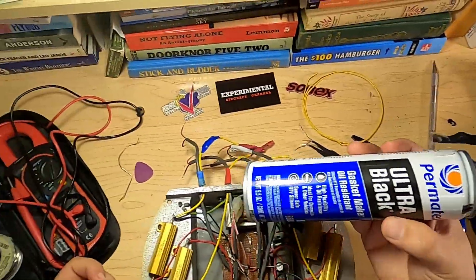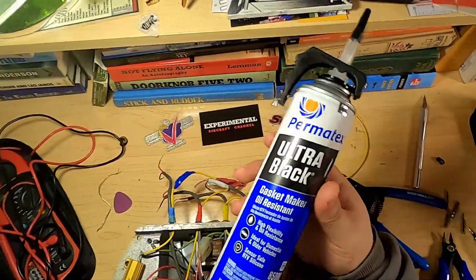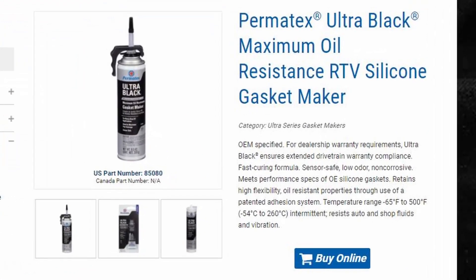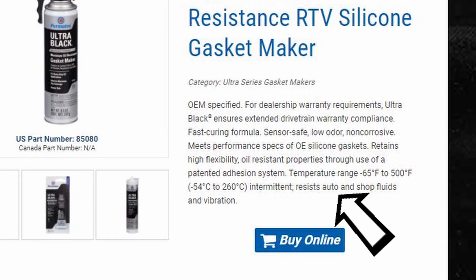Alright, so now we're going to pot the board with our fancy can of Ultra Black here. Now I use this stuff for everything. Anything that needs a gasket, whatever, this is what I use. It's fast curing, sensor safe, non-corrosive, handle high temp. And right here at the bottom, it's oil and vibration resistant. Just what we need.